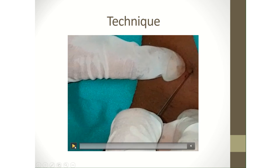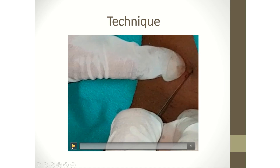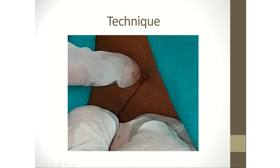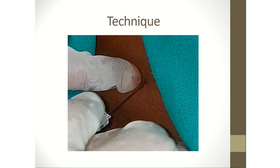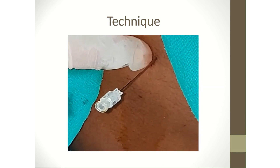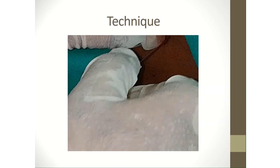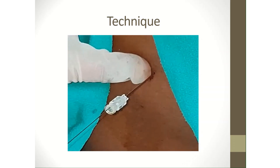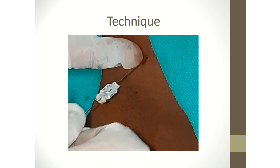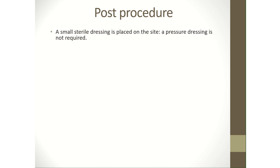This video shows how a lumbar puncture is performed. The space has been selected as previously described and the needle passes through the interspace. Once the needle traverses through the dura, a give-away feel is felt and a free flow of cerebrospinal fluid is seen. Once the procedure is over, a small sterile dressing is placed on the site and a pressure dressing is not required.